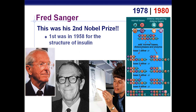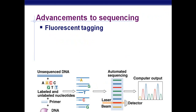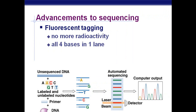This process has been advanced and made more streamlined. One advancement is to use fluorescent tagging instead of radioactive labels, which is a safer approach. Another advancement is the ability to put all four bases in one lane rather than separating them into different lanes. Each base can now be used with a different fluorescent color so we can tell them apart.